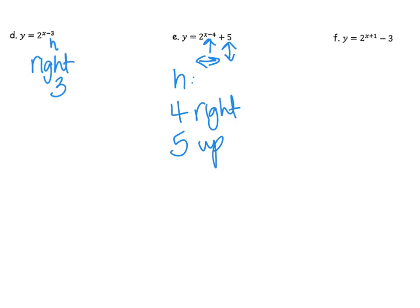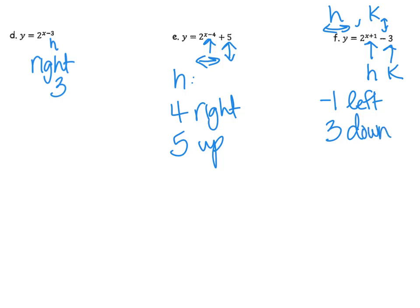On f, there's my h and my k. H always moves left or right, k goes up or down. My negative one — that's going to be negative one, which means to the left. And my three means down. That's all we're doing for this one.